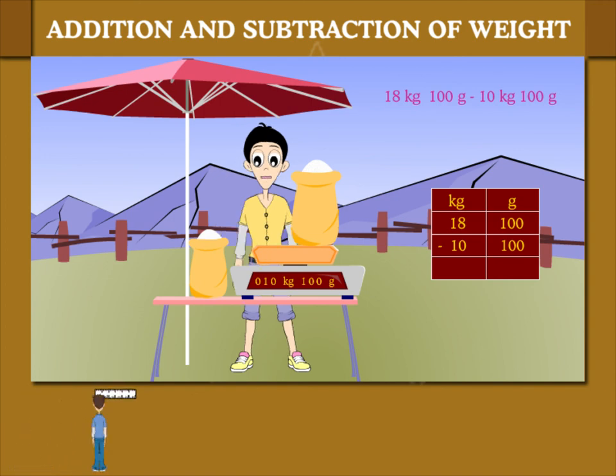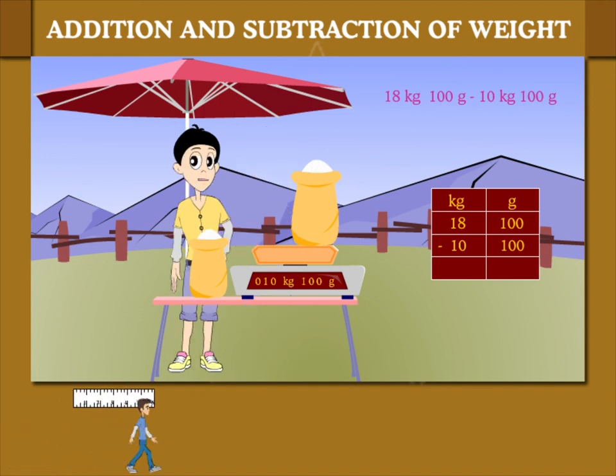The weight now is 10 kilogram, 100 grams. So 18 kilograms, 100 grams minus 10 kilograms, 100 grams gives 8 kilograms. This is the weight of the smaller bag.